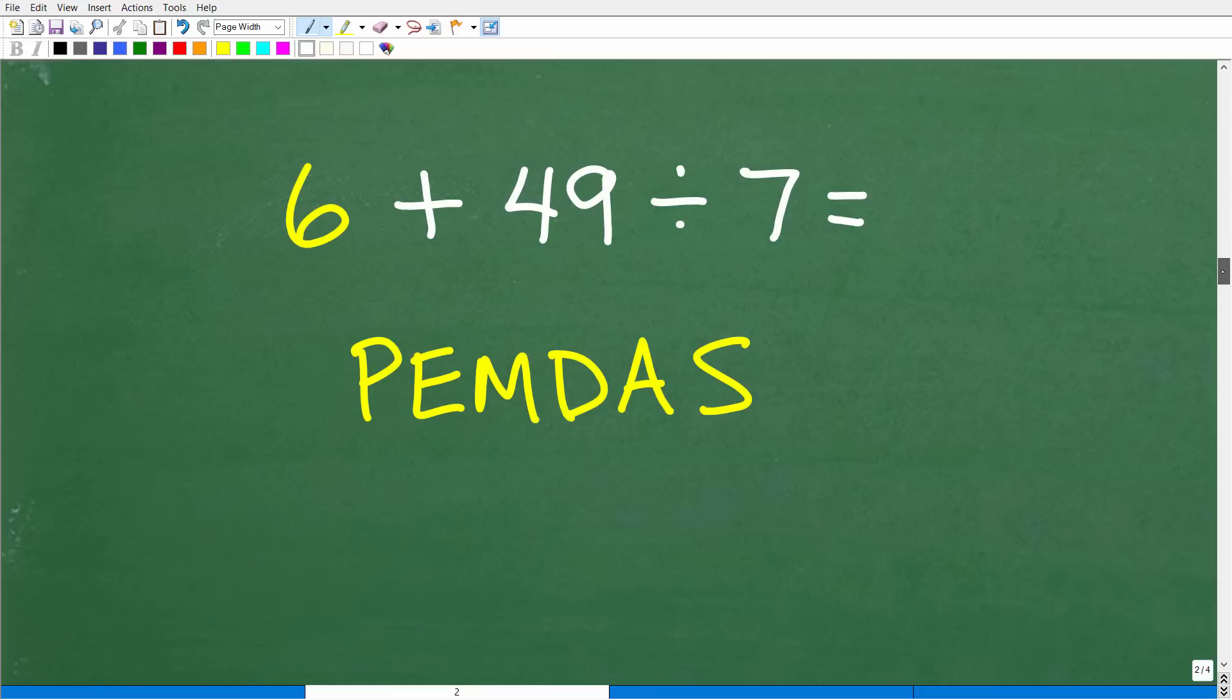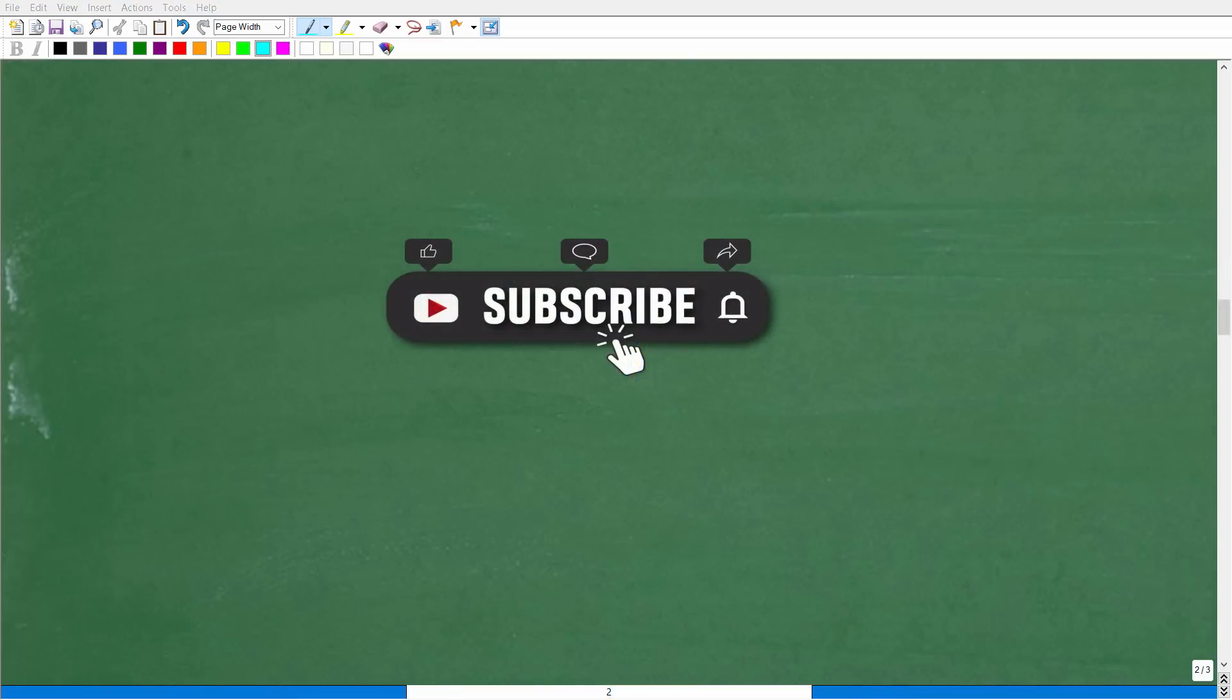All right, so we are almost done, and now we have 6 plus 49 divided by 7. We need to think about PEMDAS. So what should we do next? Now, before we continue on, please consider hitting that subscribe button. This really does help me help as many people as possible on YouTube.